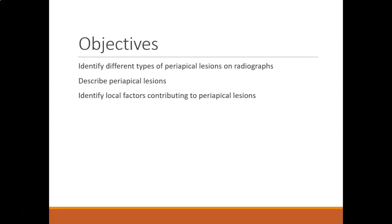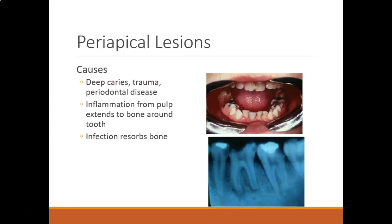Objectives: identify different types of periapical lesions on radiographs, describe periapical lesions, and identify local factors contributing to periodontal lesions. A periodontal lesion most often is caused from a large carious lesion, but it can also be trauma and periodontal disease as well.